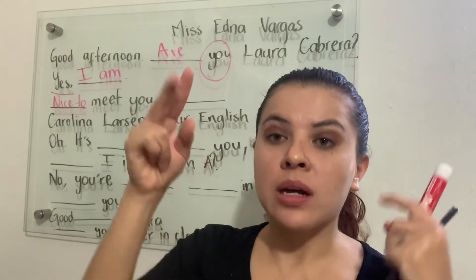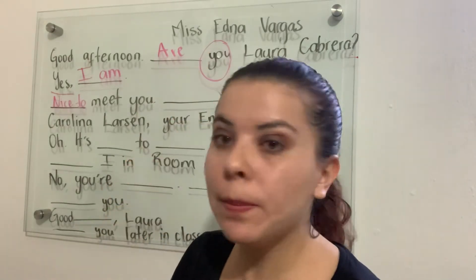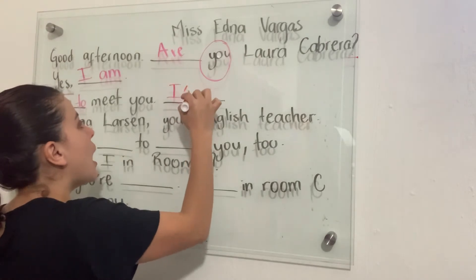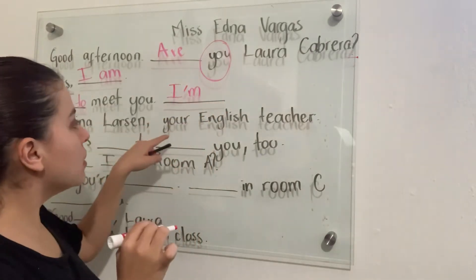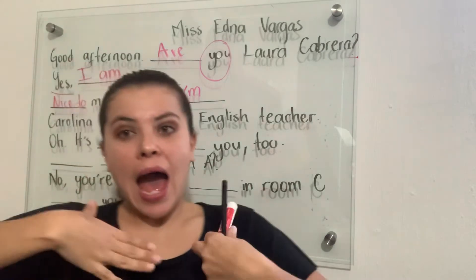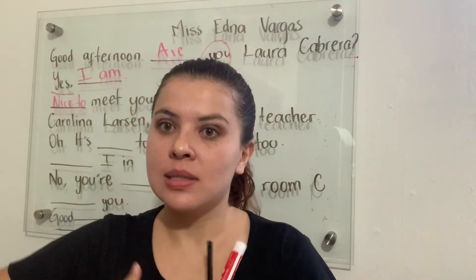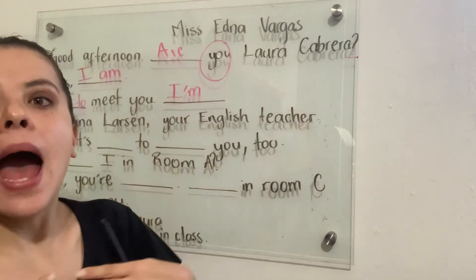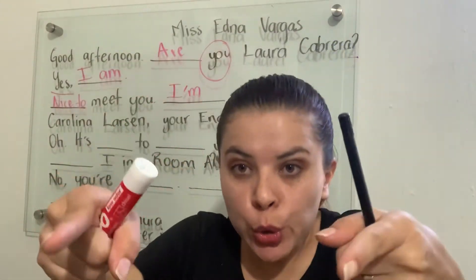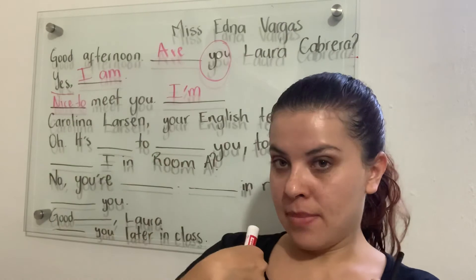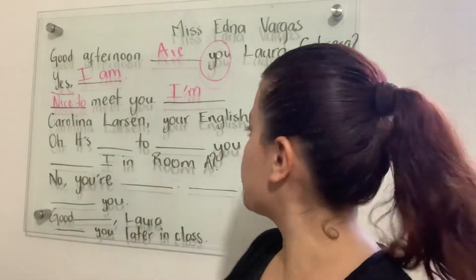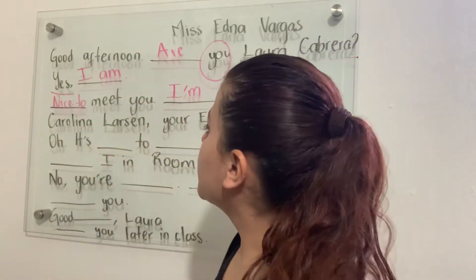'I'm Carolina Larson, your English teacher.' In this case 'your' is a possessive — 'your English teacher.' Note the use of 'I'm' as the contraction of 'I am.' The next person — I'm going to label as person B — will respond.